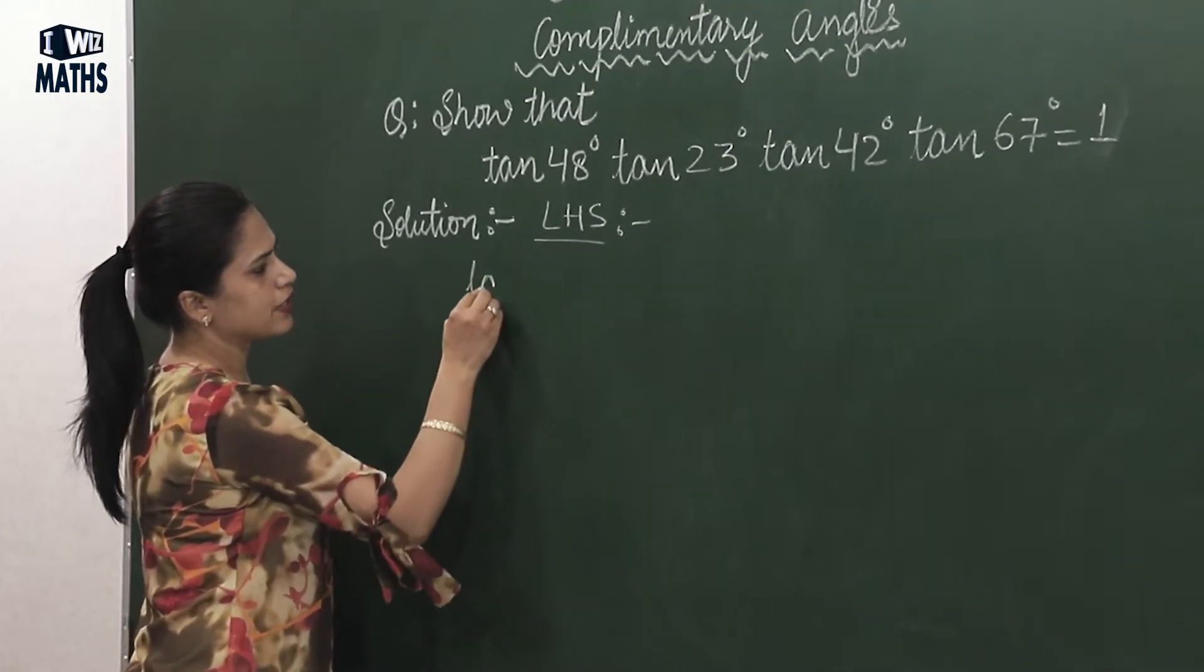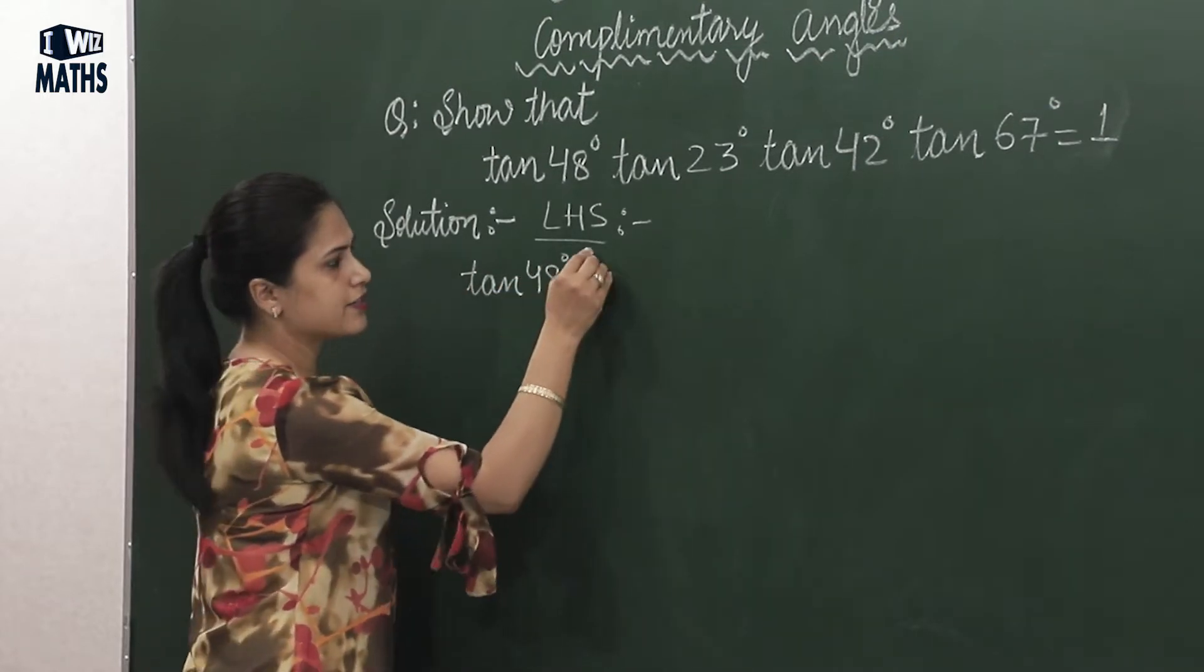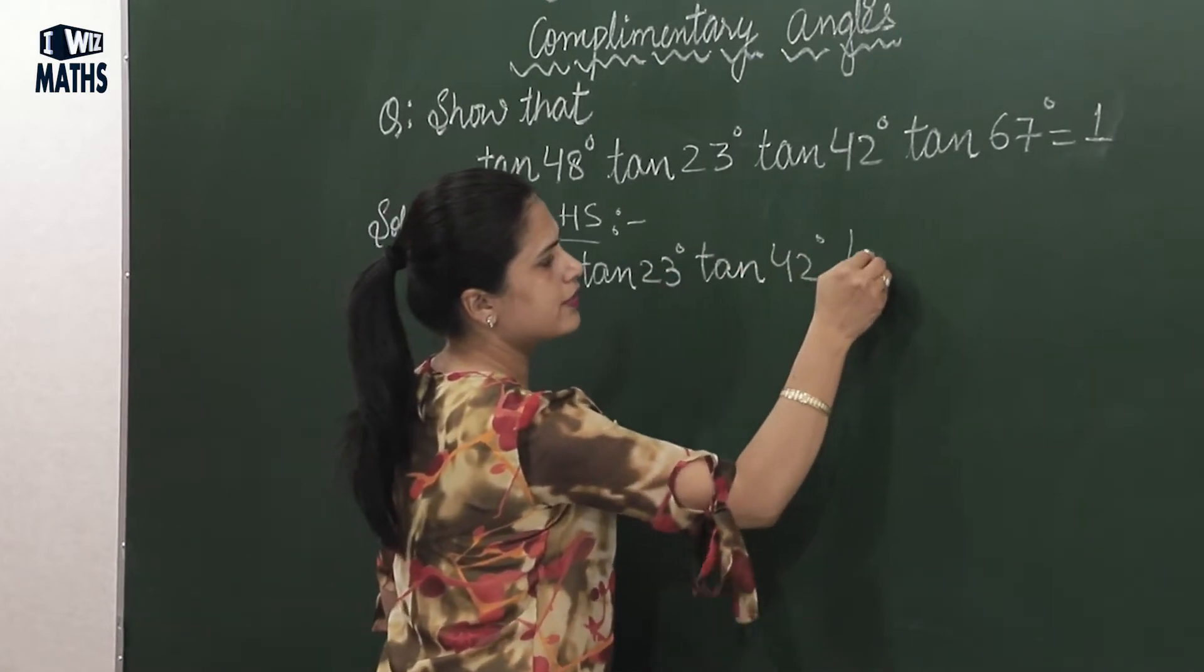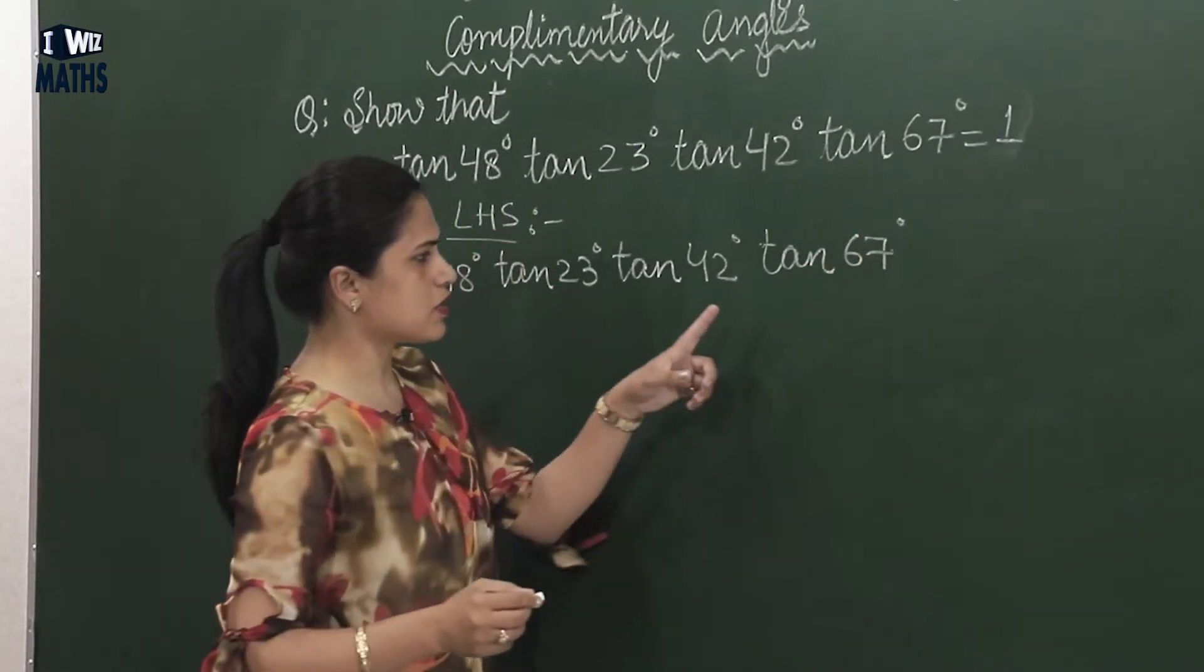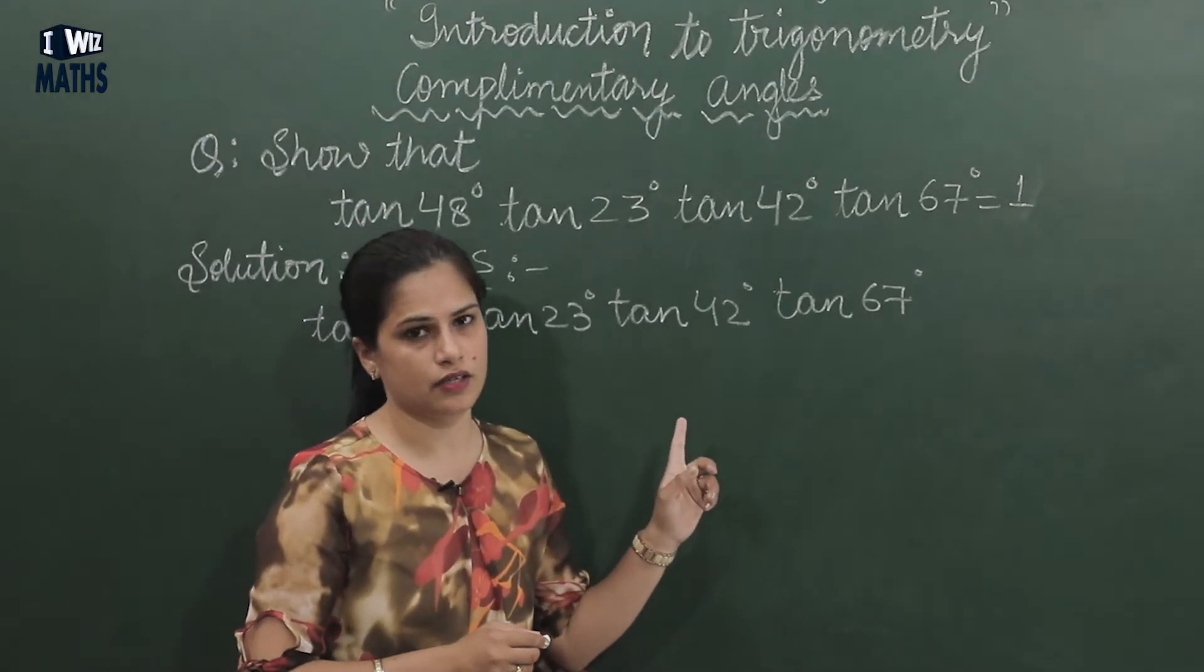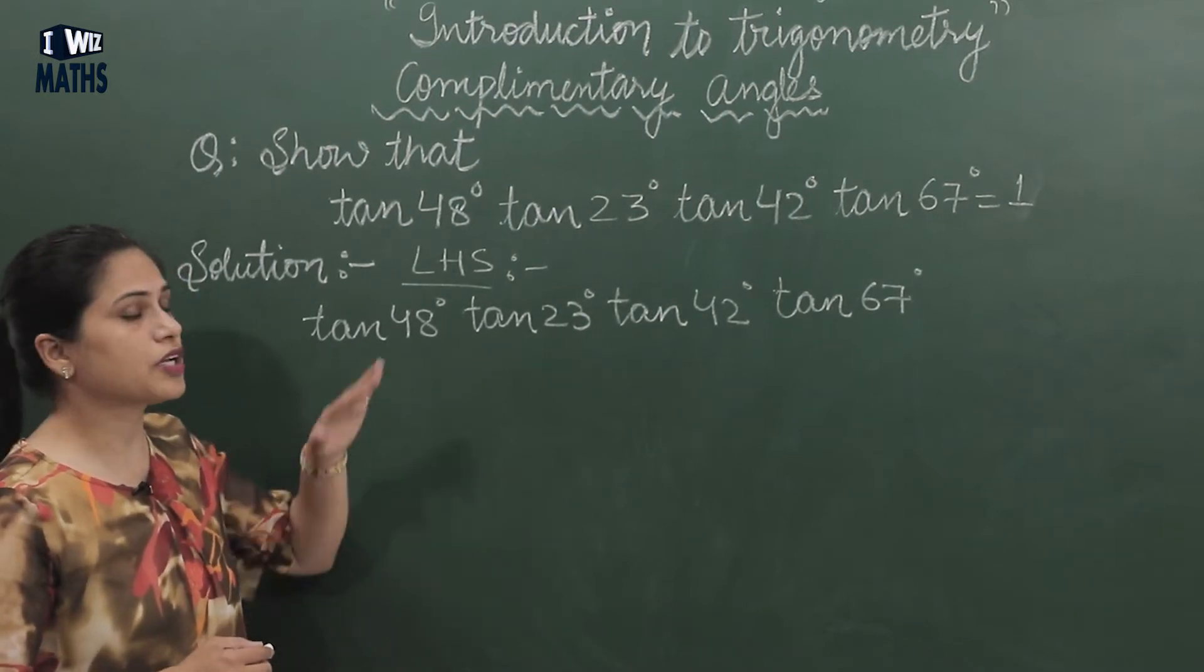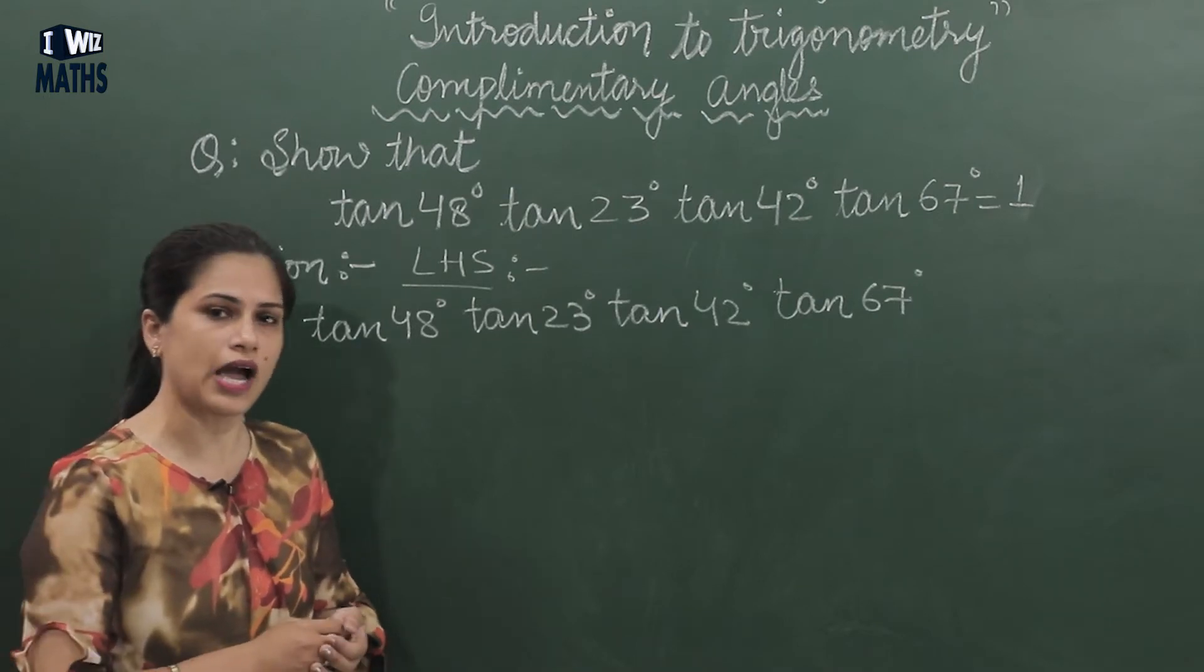LHS is tan 48°, tan 23°, tan 42°, tan 67°. Now if you see the values of all these, these are angles that are not in our table. So how will we solve these, how will we find their values? When such a case comes, we will apply the concept of complementary angles.